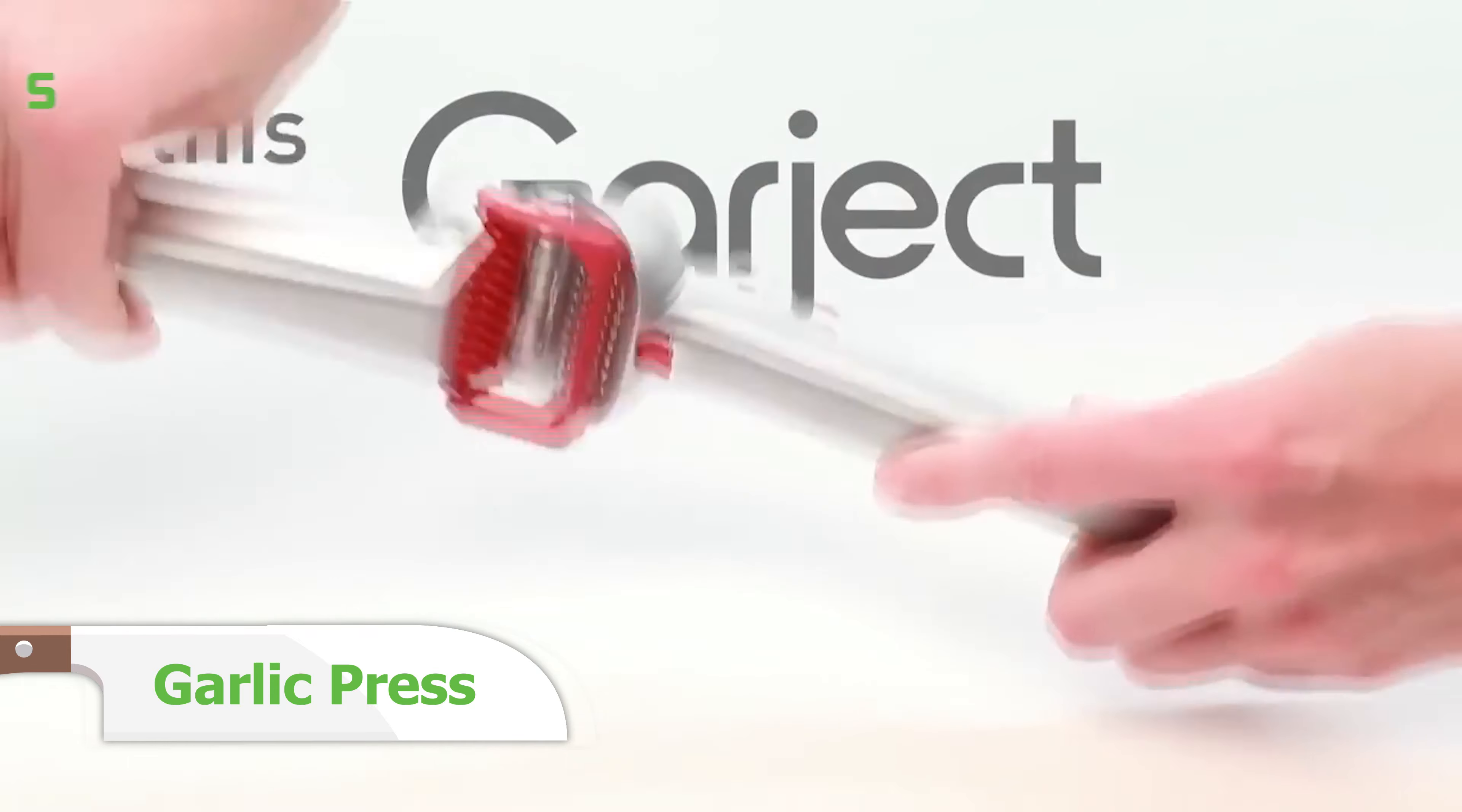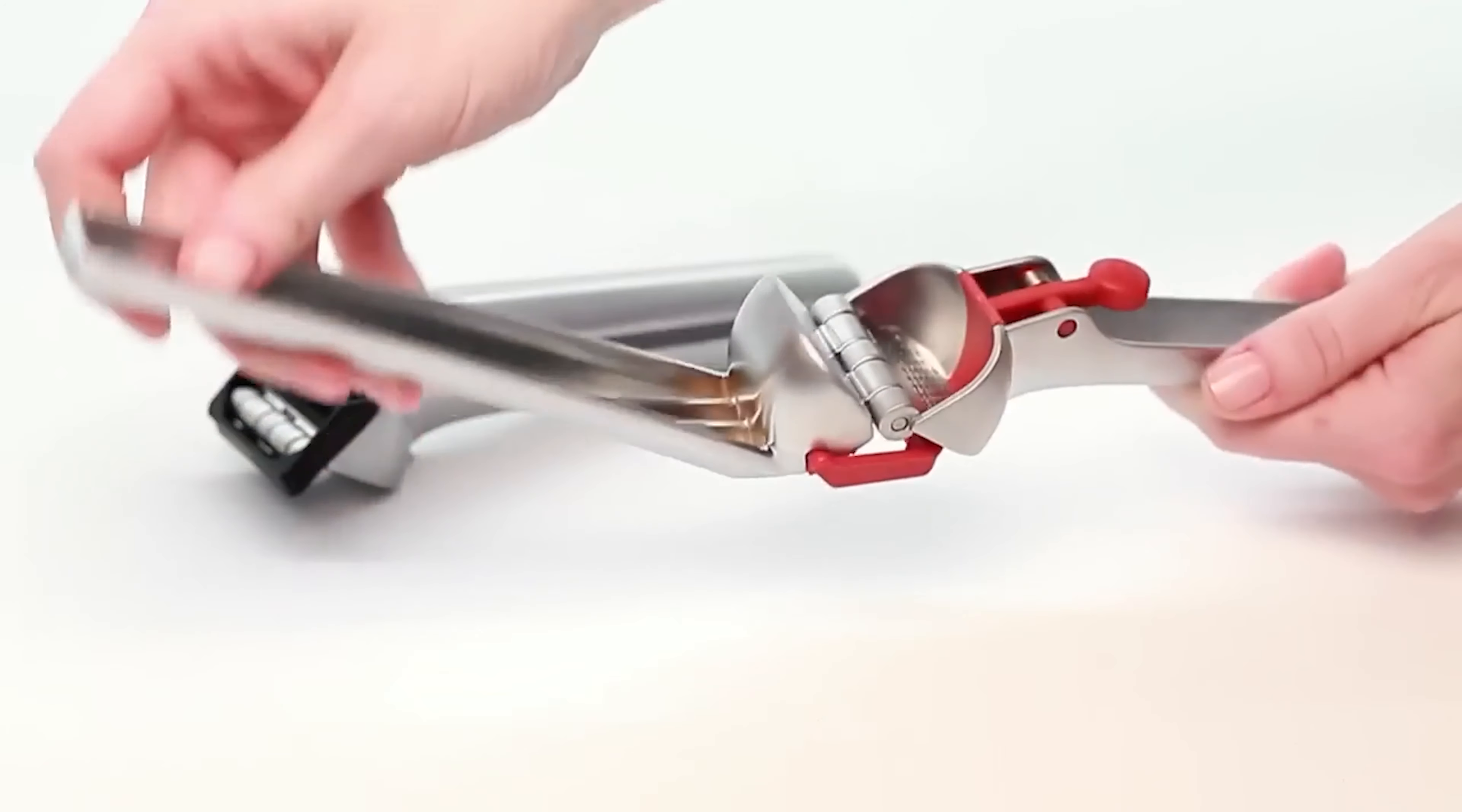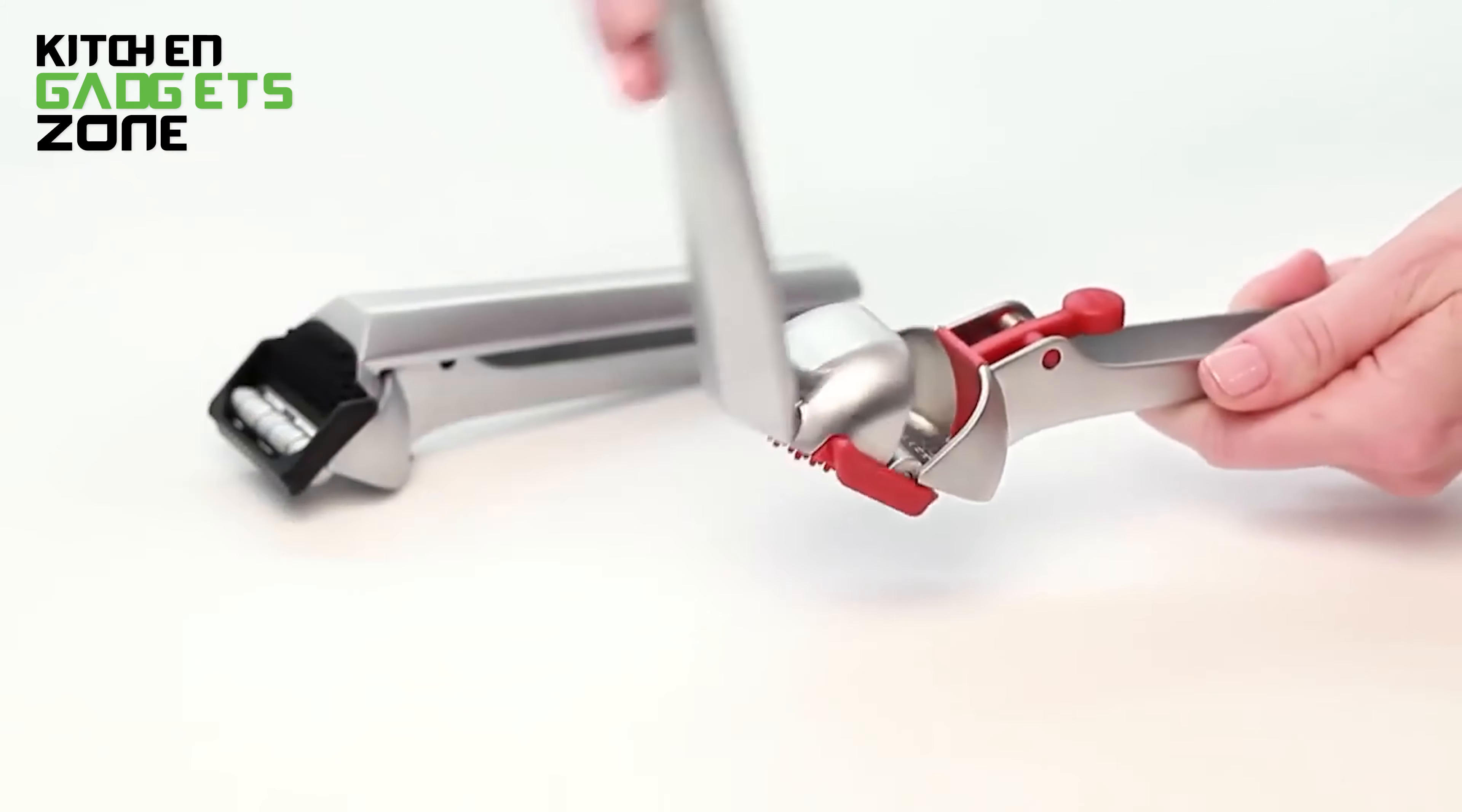Say goodbye to sticky hands and hello to hassle-free garlic prep with the Garject Garlic Press. This ingenious kitchen gadget presses unpeeled garlic with ease, scrapes itself clean, and even ejects the peel, all in one simple motion. No more stinky fingers or wasted garlic. The Garject ensures all of the flavorful goodness ends up in your meal, while practically cleaning itself in the process. It's the world's best garlic press, designed to make your life easier and your dishes more delicious.